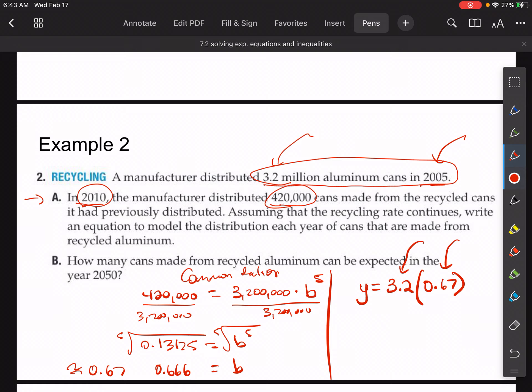That's the B value, the common ratio. And then we know that the time frame, if we wanted to make an equation for this, for any time frame, we can call the time frame X. So this is our equation, our exponential equation for what's happening here with the aluminum cans.